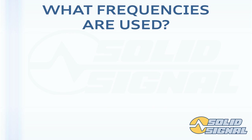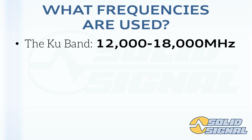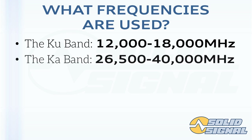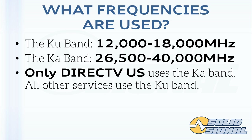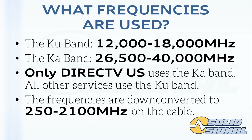Most satellite broadcasting takes place on the KU band at 12,000 to 18,000 MHz. Remember, radio and television is more like 400 to 800 MHz. They use these high frequencies because that way they need a lot less power to get a lot more distance. Some satellites broadcast on the KA band, which is 26,500 to 40,000 MHz; however, only DirecTV US uses the KA band. All the stuff from those bands gets translated down, and when it travels over the cable it's traveling at a frequency of 250 to 2,100 MHz, which makes a lot more sense for putting electricity through a wire.